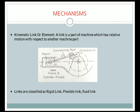The first topic in mechanisms is the kinematic link or element. A link is a part of a machine which has relative motion with respect to another machine part. Each part has relative motion with respect to an adjacent link.